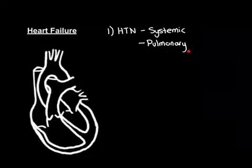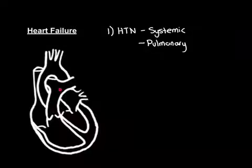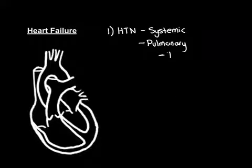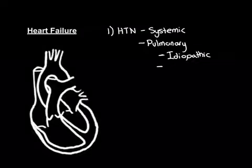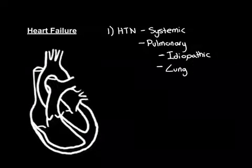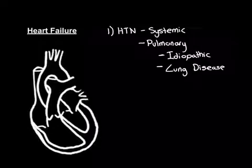Now let's talk about pulmonary hypertension, which is much rarer. It means high blood pressure in the pulmonary arterial system. There are lots of different causes. One of the main ones can be idiopathic — primary pulmonary hypertension — which is a very rare disease. Much more commonly, it happens secondary to lung disease. If people have severe lung disease, what can happen is that it destroys all the capillaries within the lung tissue. Let's draw a small picture of the lungs.